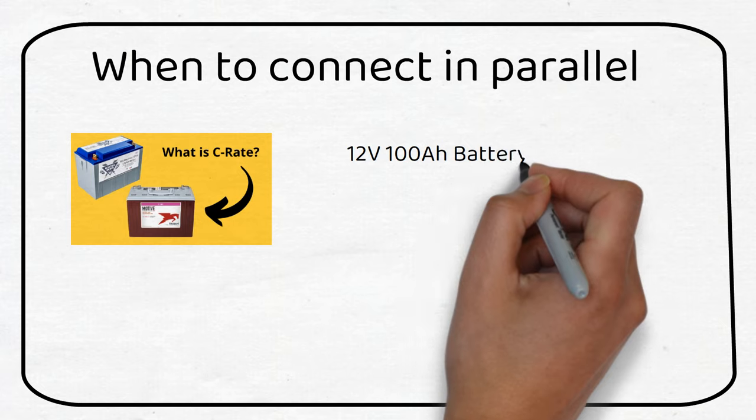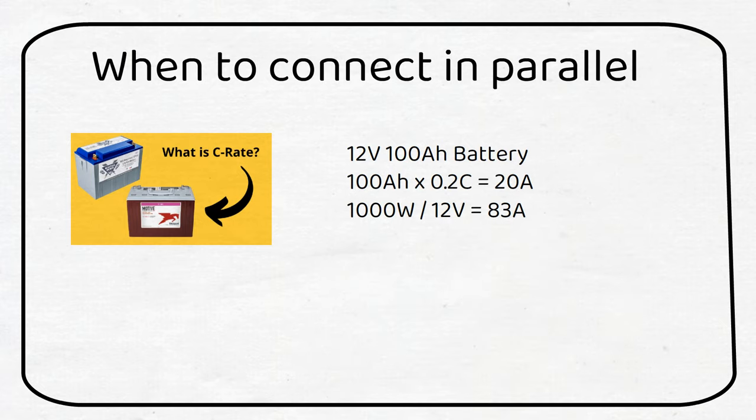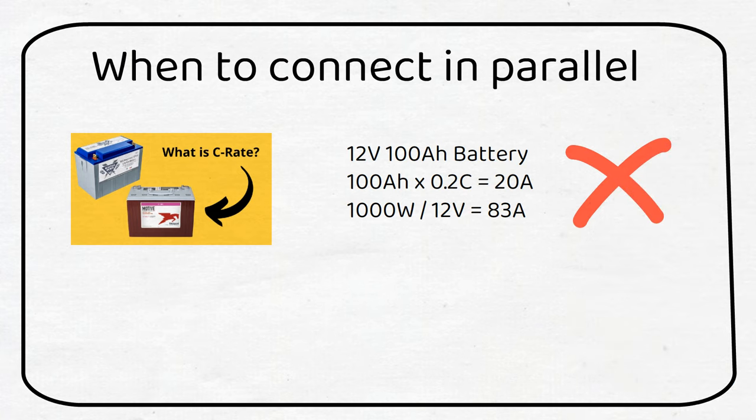Let's say you have a lead acid battery that is 12 volts, 100 amp hours, and you have a 1000 watt inverter. The C-rate of a lead acid battery is 0.2C, or in this case 20 amps. To feed your inverter you'll draw about 83 amps. This is much more than the recommended 20 amp charge and discharge rate. While the system might work, it will reduce the lifespan and capacity of the battery due to heat generation.